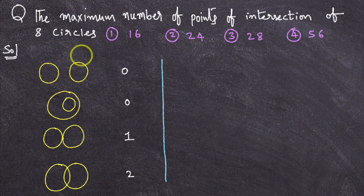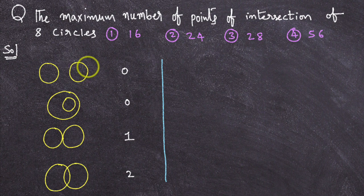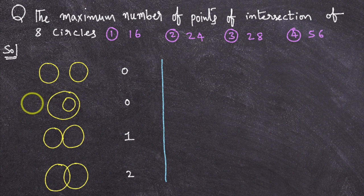You observe here, if 2 circles are not intersecting, then how many points of intersection will you get? 0 points of intersection. If one circle completely lies inside the other, then how many points of intersection will you get? 0.